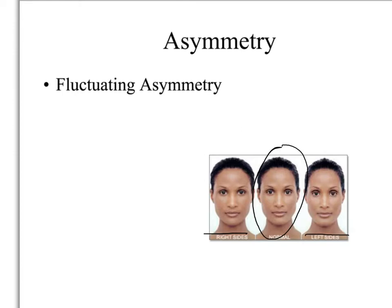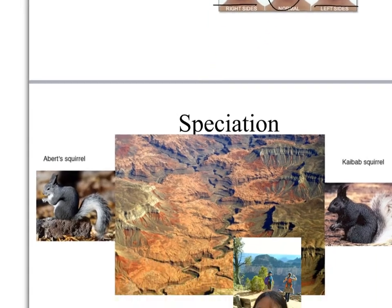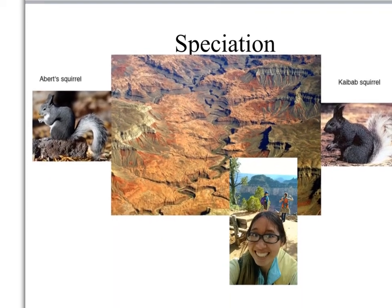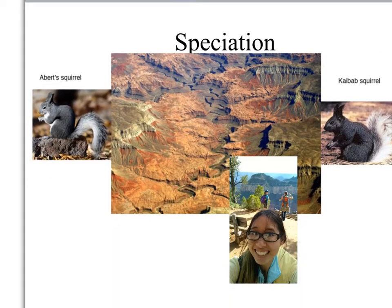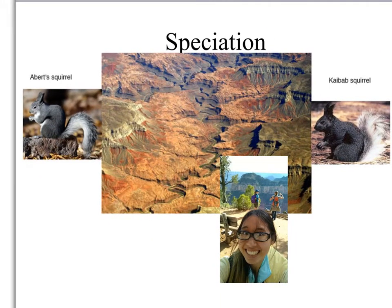I'll be talking to you about symmetry in respect to speciation. Speciation is generally the process whereby one species gets split into multiple populations, and then those populations develop into species. Typically, when we think about speciation, we think about allopatric speciation — one main population being divided into multiple populations.